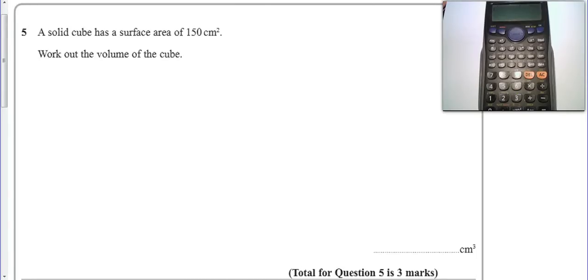All right, here we go. Question number five. So we've got a solid cube has a surface area of 150cm squared. We need to work out the volume.